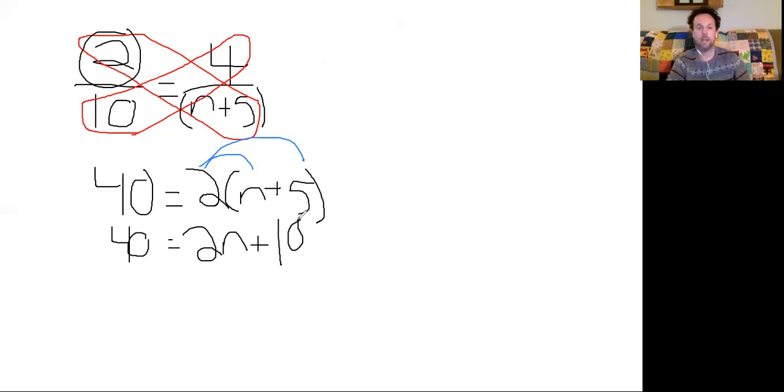And from here, I now have a two-step equation, which we have been practicing, which we are very good at. So in order to get rid of that 10, remember, I have a positive 10. So the opposite of positive 10, negative 10. Subtract 10 from both sides, leaving me with 30, 40 minus 10 is 30, equals 2n. So I have 30 equals 2n. I don't have anything else that I can add or subtract.